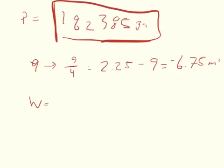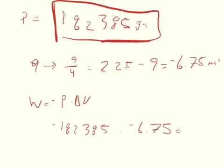Now work equals negative P times change of V. So we can plug in negative 182,385 and multiply that by negative 6.75. It's going to give us a positive answer, a positive work of 1,231,098.75 joules.